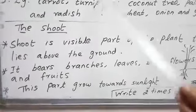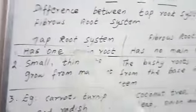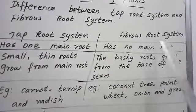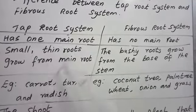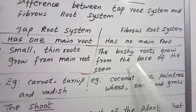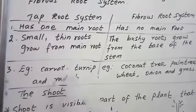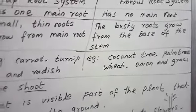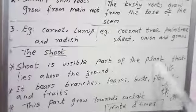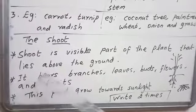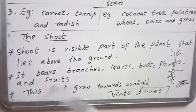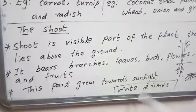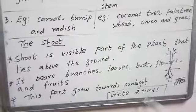V-I-S-I-B-L-E. Shall we read it? Tap root, fibrous root — what is the difference between tap root and fibrous root? Tap root has one main root; fibrous root has no main root. Small thin roots grow from the main root; bushy roots grow from the base of the stem. Examples: carrot, turnip, and radish for tap root. Coconut tree, palm tree, wheat, onion, and grass for fibrous root. Shoot is a visible part of the plant that lies above the ground. It bears branches, leaves, buds, fruits, and flowers. This part grows towards the sunlight. Children, write it two times in your rough note. Thank you children.